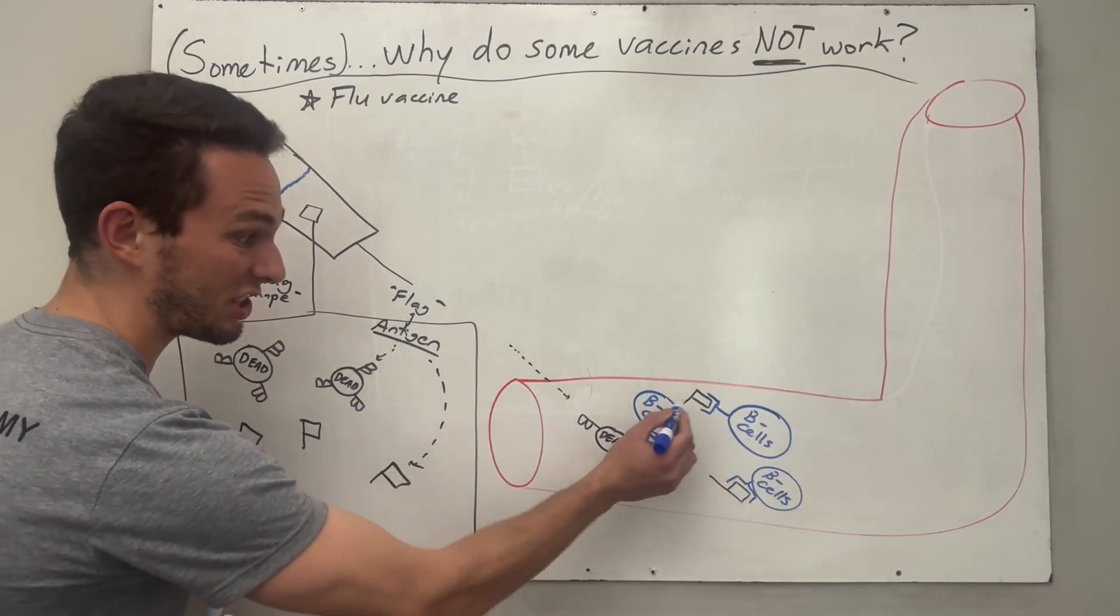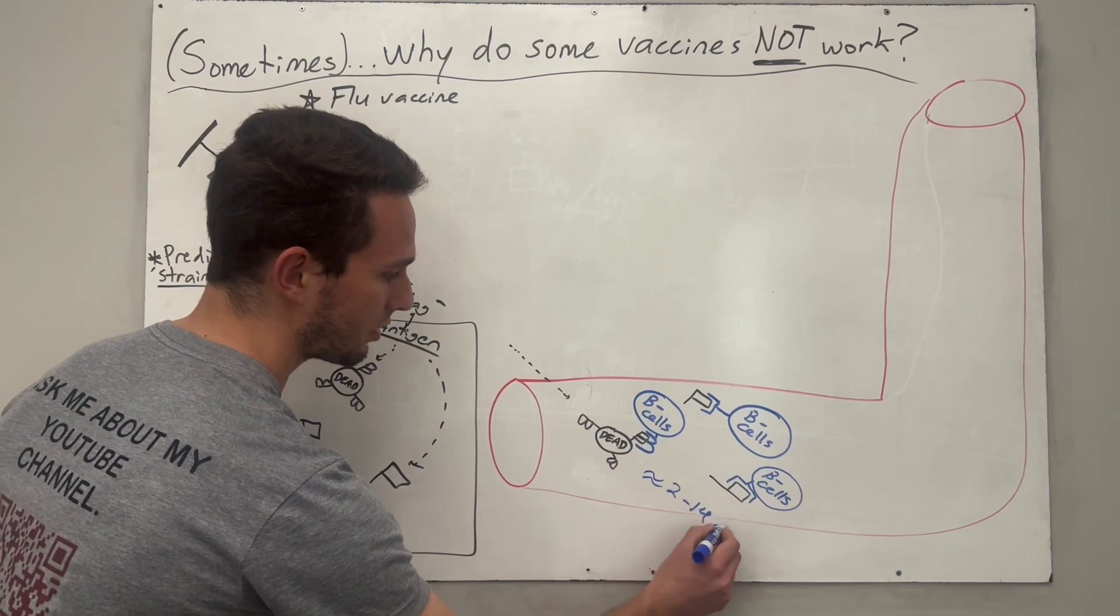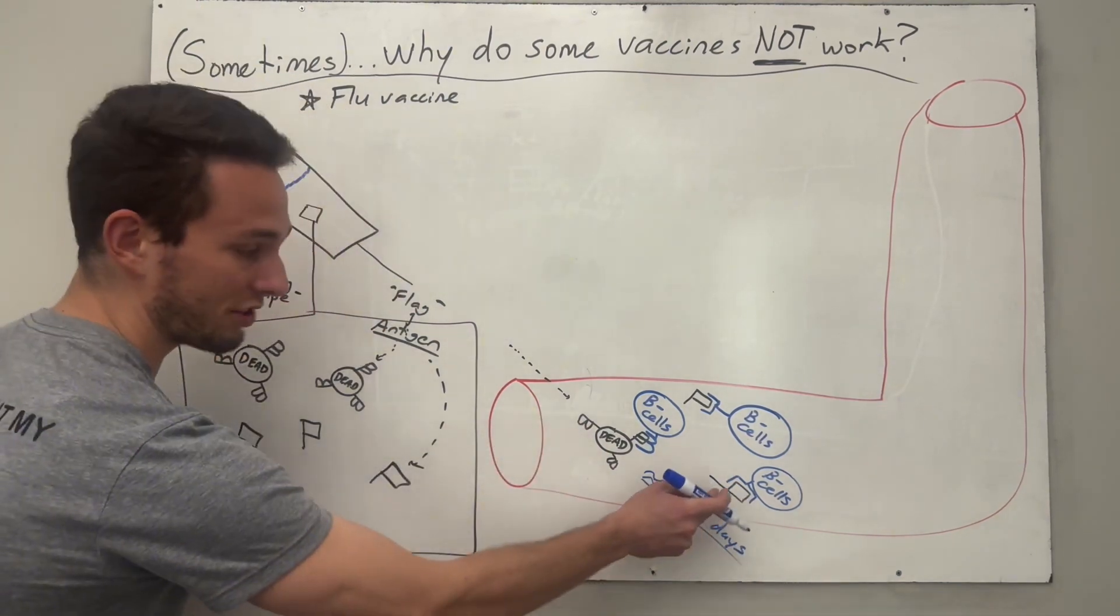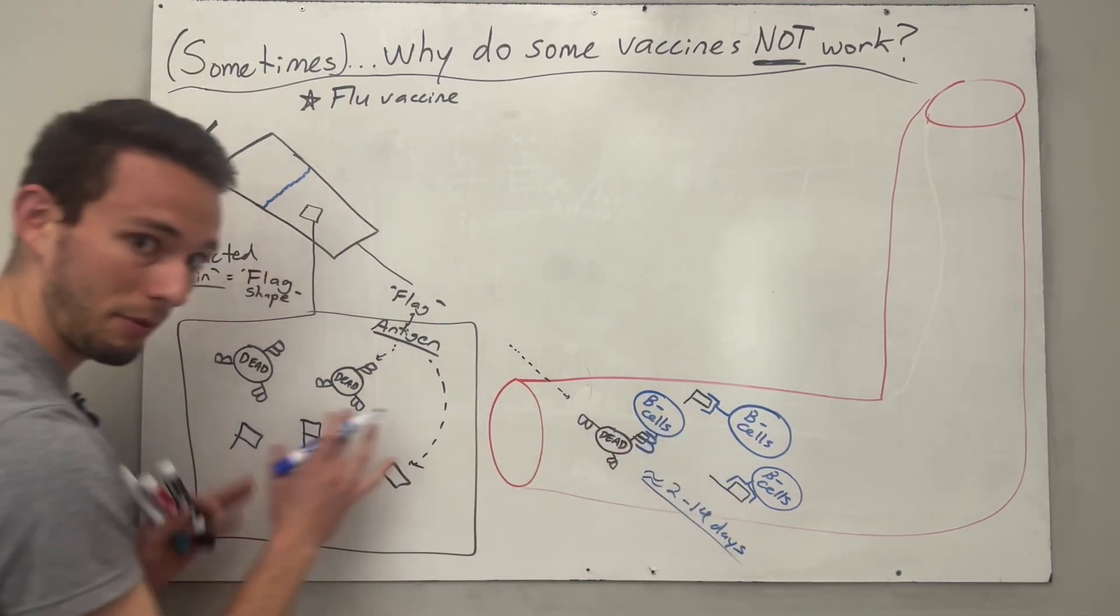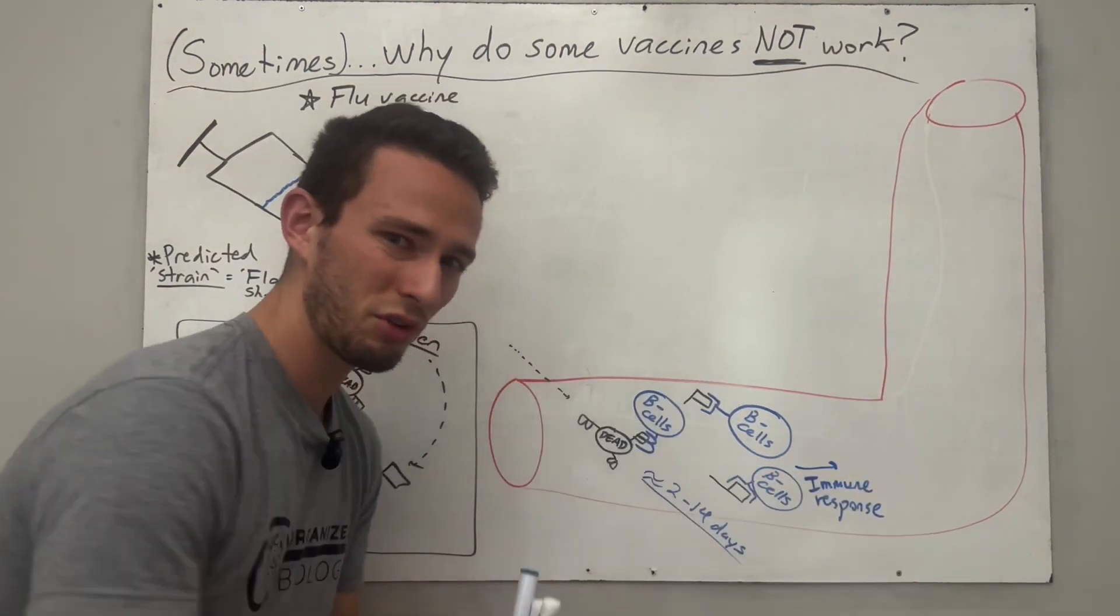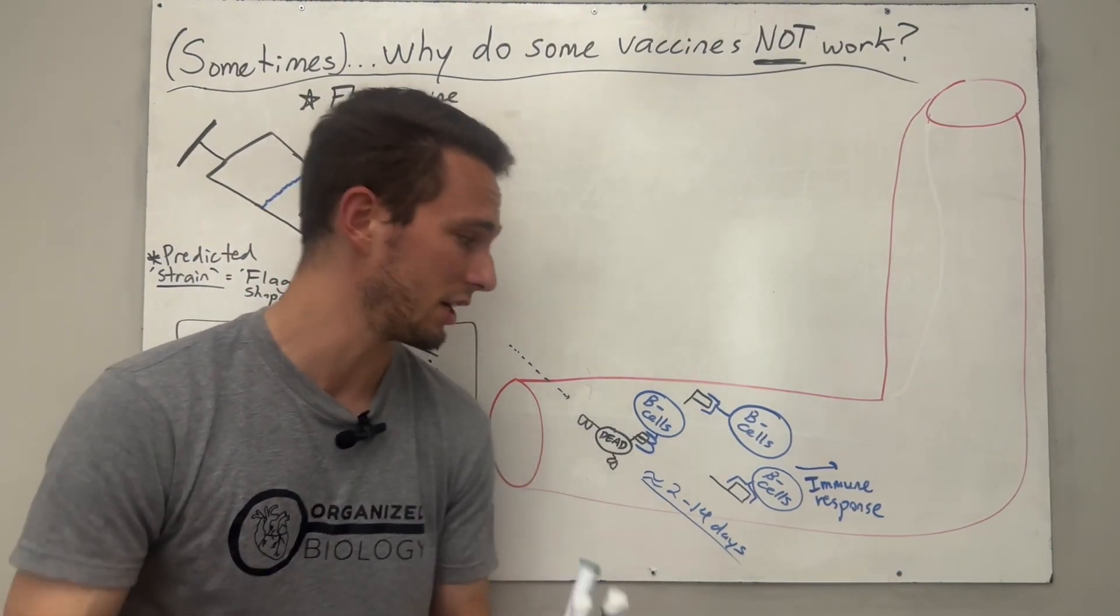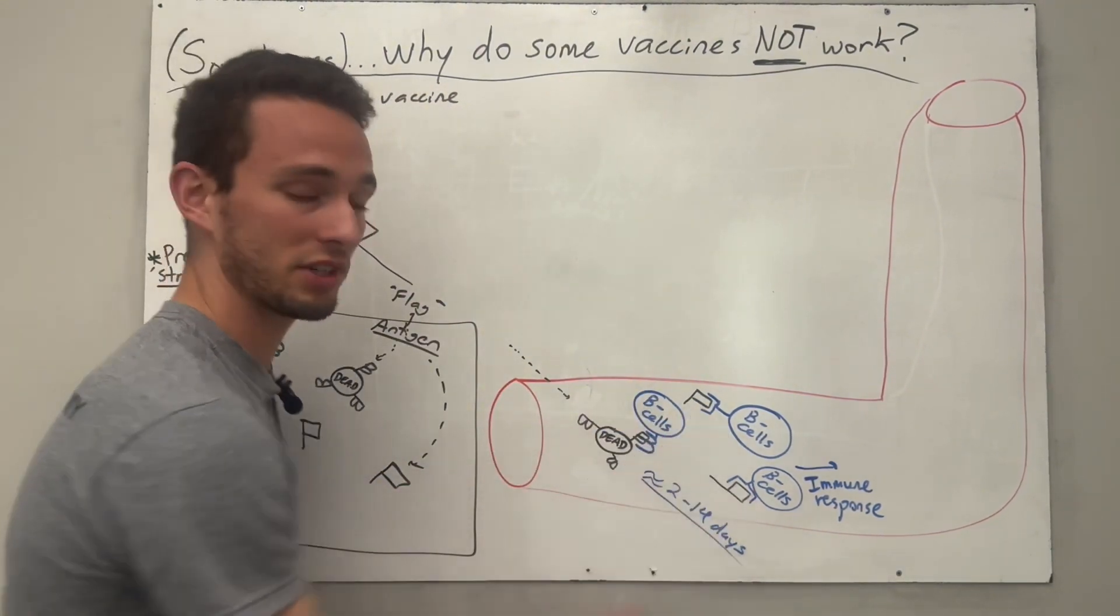And this process of having this B cell actually find those antigens takes give or take anywhere from 2 to 14 days. So once your B cells locate these antigens from these strains of viruses, they will initiate basically an immune response. And that immune response may make you feel just a tad bit under the weather, but it's completely normal because you're actually learning how to fight off these potential strains.